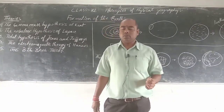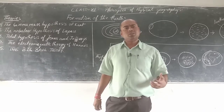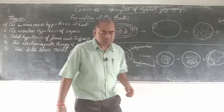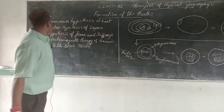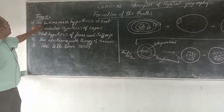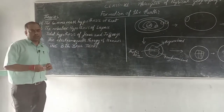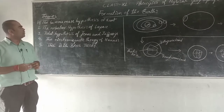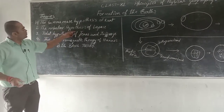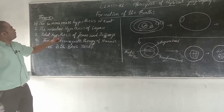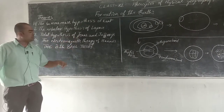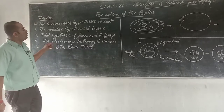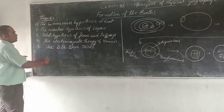Before dealing with the Big Bang Theory, let us know the different theories given by different geographers. Number one is the Gaseous Mass Hypothesis of Kant. Next is the Nebular Hypothesis of Laplace. Third is the Tidal Hypothesis of Jeans and Jeffries. Fourth is the Electromagnetic Theory of Alfvén. And the last one is the Big Bang Theory, which you will read in this syllabus.